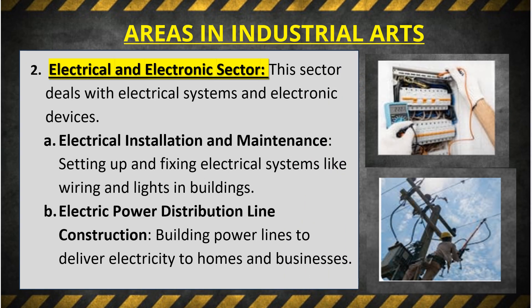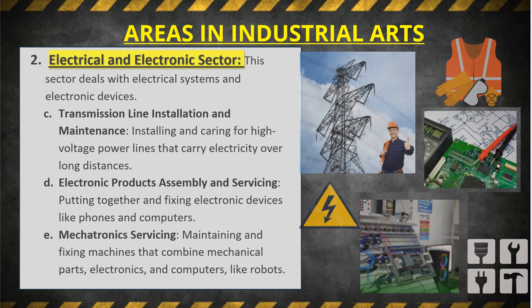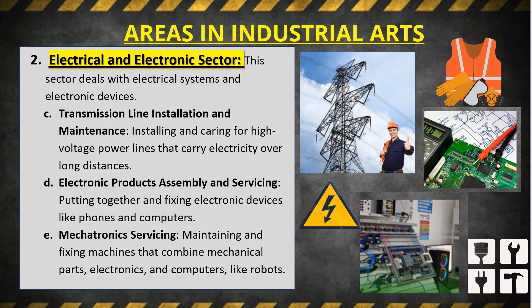Number two: the electrical and electronic sector deals with electrical systems and electronic devices. Sub-areas include: (a) electrical installation and maintenance — setting up and fixing electrical systems like wiring and lights; (b) electric power distribution line construction — building power lines to deliver electricity to homes and businesses; (c) transmission line installation and maintenance — installing and caring for high-voltage power lines over long distances; (d) electronic products assembly and servicing — putting together and fixing electronic devices like phones and computers; and (e) mechatronics servicing — maintaining and fixing machines that combine mechanical parts, electronics, and computers, like robots.